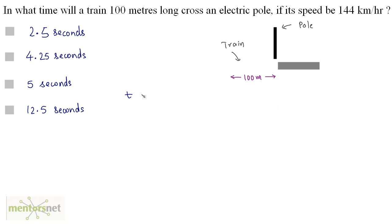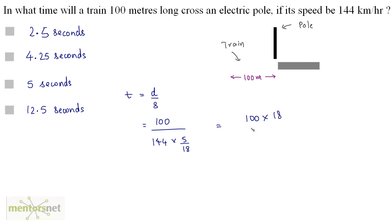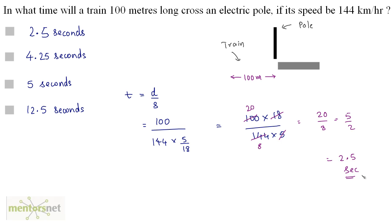What we want is time, so t equals distance upon speed. The distance is 100 meters divided by the speed. The speed is 144 km per hour, but we need it in meters per second, so 144 times 5 by 18 meters per second. This gives us 100 times 18 by 144 times 5. Since 18 times 8 is 144 and 5 times 20 is 100, this simplifies to 20 by 8, which is 5 by 2, giving 2.5 seconds. The time taken by this train is 2.5 seconds.